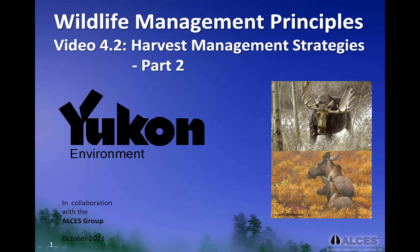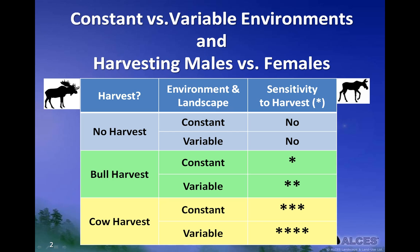In this second part of video 4, we will summarize the main lessons from the harvesting scenarios where we explore the implications of constant versus variable environments and sex-selective harvesting. This table provides a summary of the six scenarios, and within the right-hand column titled Sensitivity to Harvest, it ranks the combinations of bull and female harvests with constant and variable environments.